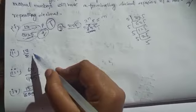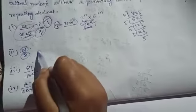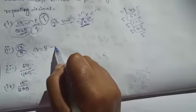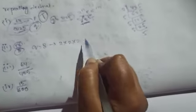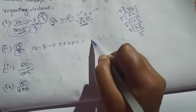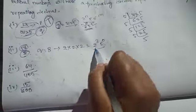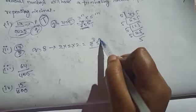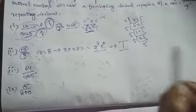Next question: 17 by 8. Here 17 is a prime number. q equals 8. 8 can be written as 2 into 2 into 2, which is equal to 2 cube into 5 power 0. So 8 is in the form of 2 cube and 5 power 0, so it is a terminating decimal.